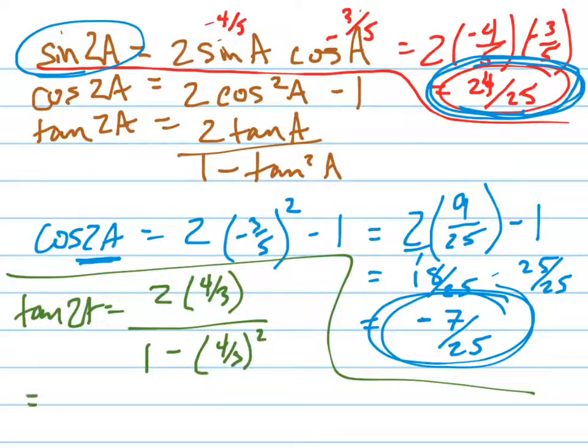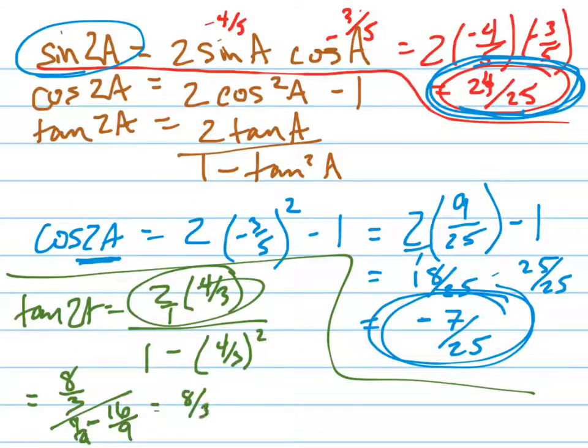So let's do that math on that. This becomes 8/3 on the top. Remember, that's 2 over 1. And this becomes 1 minus 16/9. Change that to 9/9. And you get 8/3 divided by 9 minus 16 is negative 7/9. Now flip and multiply. And that equals 8/3 times negative 9/7.